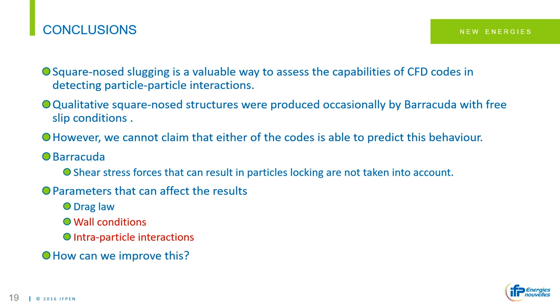In conclusion, square nose slugging is a valuable way to assess the capability of CFD codes in detecting particle-particle interactions. We played around with Barracuda drag laws and free-slip conditions and could qualitatively capture square nose structures. However, we cannot say that either code is able to fully predict this behavior. Barracuda shear forces that could result in particle locking are not taken into account. Further work is needed on drag laws, wall conditions, and intra-particle interactions, especially for Group B particles.